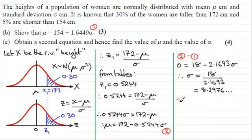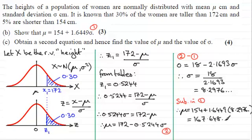So I'm going to substitute this. It obviously doesn't matter which one you sub it in. I'm going to sub it in equation 1. If I do that, we therefore have μ equaling 154 plus 1.6449 multiplied by σ, which is 8.2976 and so on. If you work that out, you end up with 167.648 and so on.